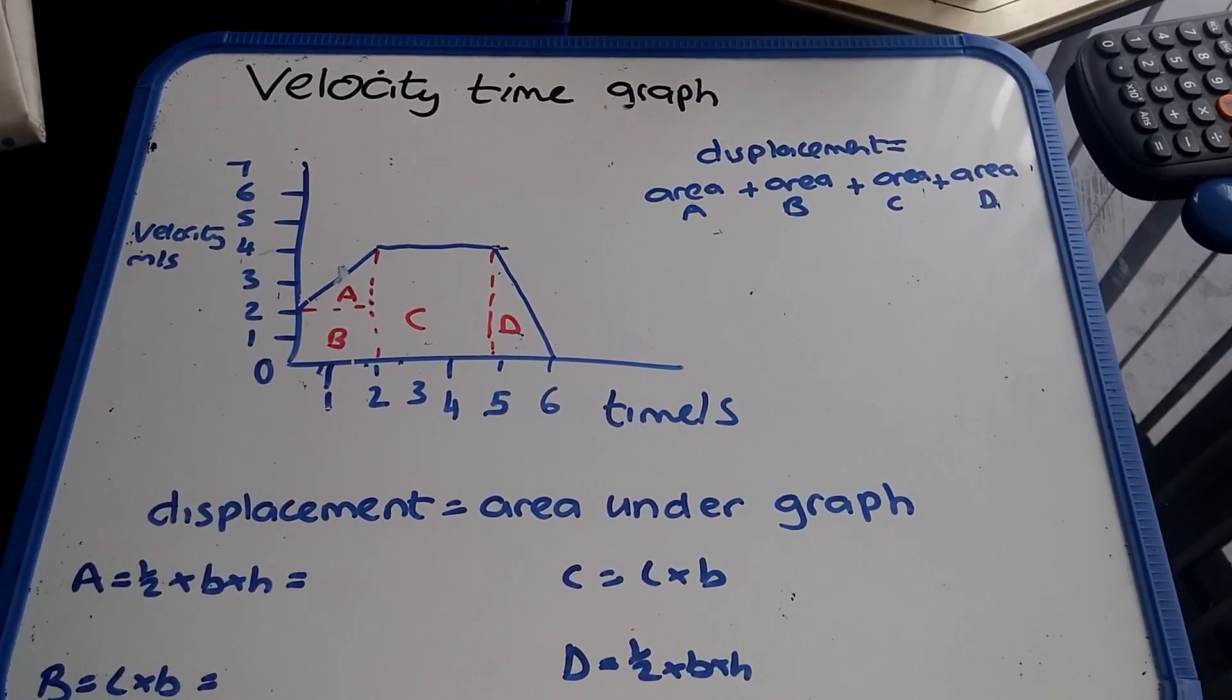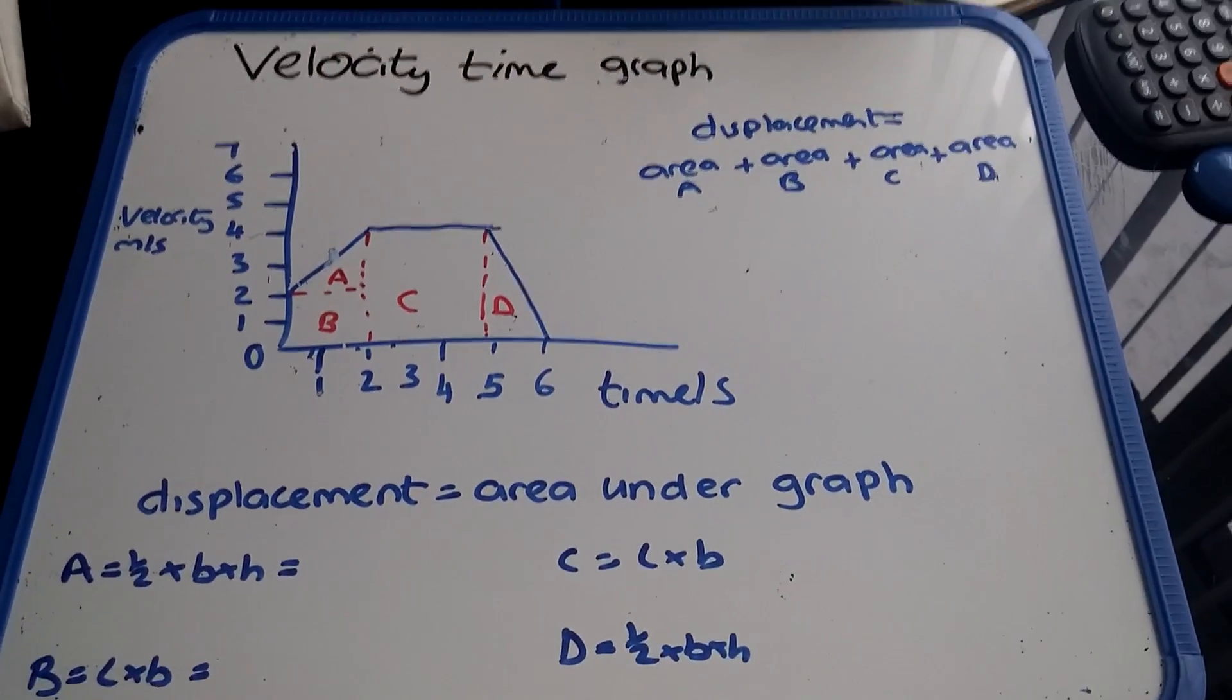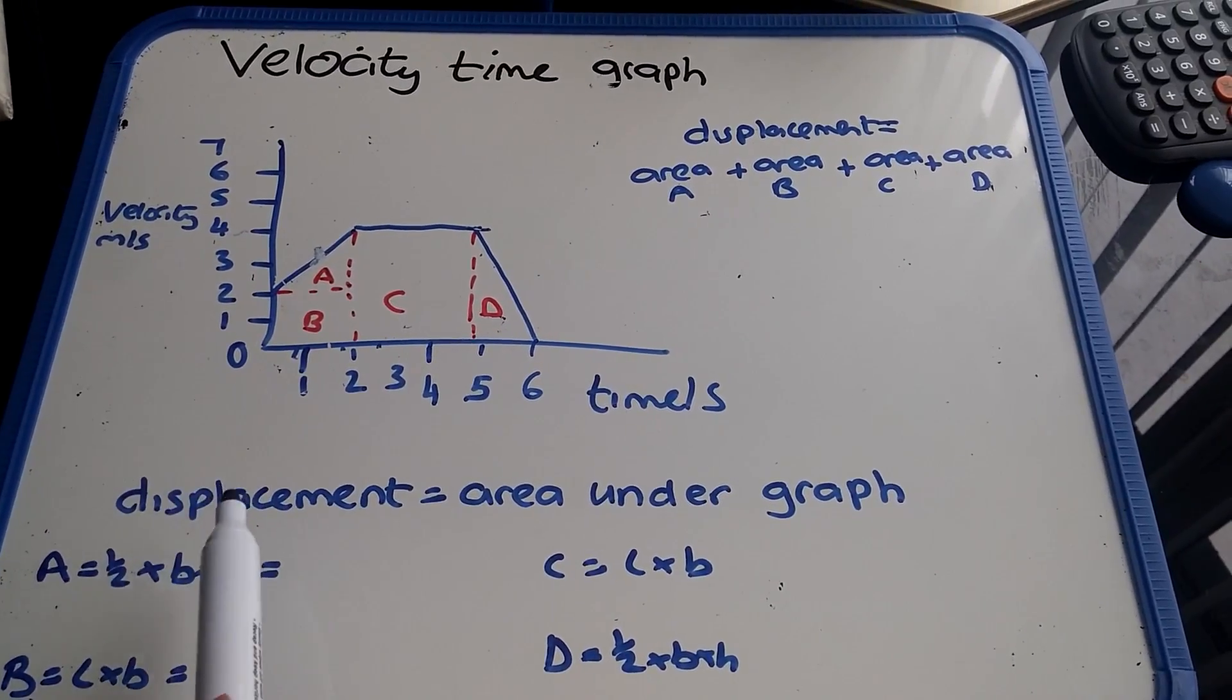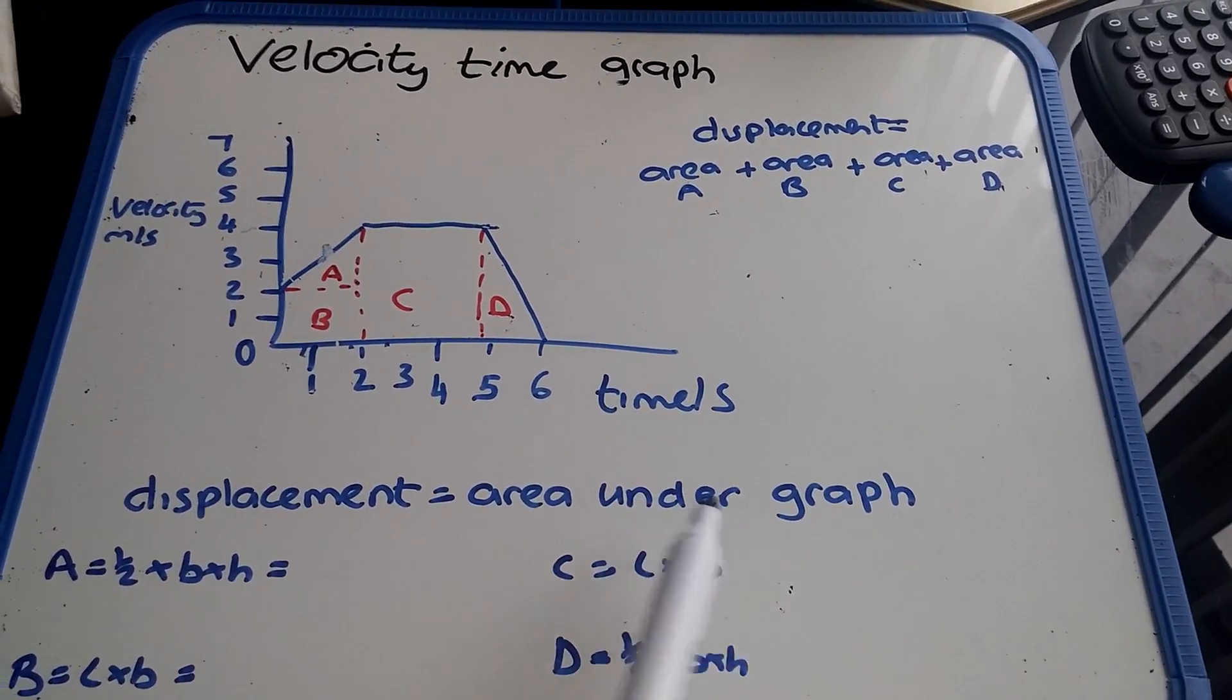We're going to look at finding the displacement from a velocity-time graph. To do this, you have to write - and you do get a mark on your exam for this - displacement equals area under graph.